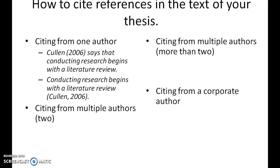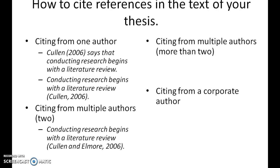How to cite references in the text of your thesis: if you're citing from one author, look at these two examples — 'Cullen (2006) says conducting research begins with a literature review' or 'conducting research begins with a literature review (Cullen, 2006).' It doesn't really matter which way, as long as those two pieces of information are there: the author name and the year of publication. When citing from two authors you say 'Cullen and Elmore.'